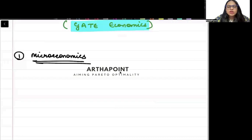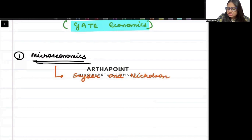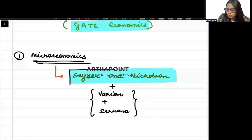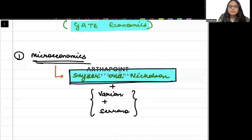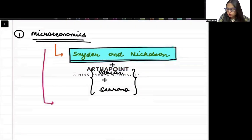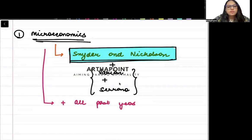The best book which you can use for microeconomics can be Snyder and Nicholson. It is an excellent book for referring for microeconomics. You can combine Snyder and Nicholson with Varian and if time permits some part of Serrano. But the major book which you should be following should be Snyder and Nicholson. Apart from this, of course, you need to go ahead and cover all past year papers of GATE from the point of view of microeconomics.